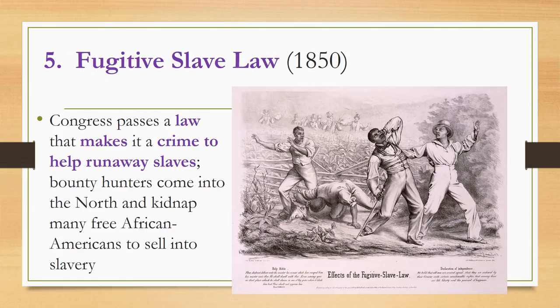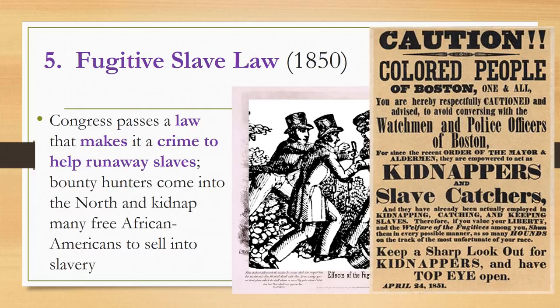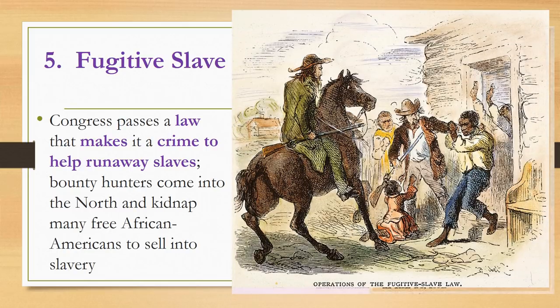The Fugitive Slave Law was passed in 1850, which made it a crime to help runaway slaves. That means if you did not believe in slavery and were perhaps part of the Underground Railroad, allowing your home to be a station along a slave's route to freedom, you were now breaking the law. The Fugitive Slave Law also made it legal for bounty hunters or slave catchers to come up into the north to search for runaways, kidnap them, and take them back down south. Free African Americans living in the north who had never been slaves were in grave trouble too, because this new law made it legal for slave catchers to kidnap them and sell them into slavery in the south.